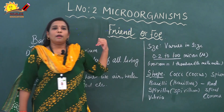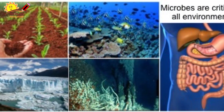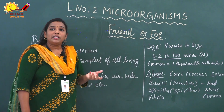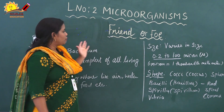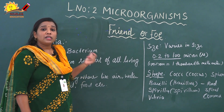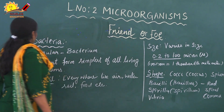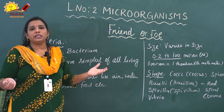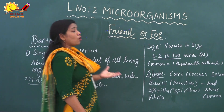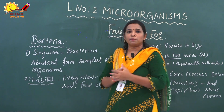First, we will discuss bacteria. Before studying bacteria, note that micro-organisms are present everywhere — in ponds, marshlands, deserts, and even in plant and animal bodies and dead and decaying matter. Bacteria, singular: bacterium. It is the most abundant and simplest of all living organisms. Among the 5 groups, bacteria is the most abundant one with many different varieties, and its body structure is very simple.